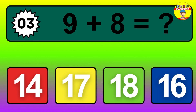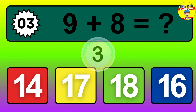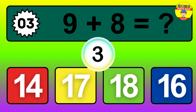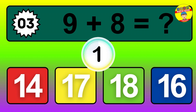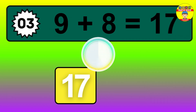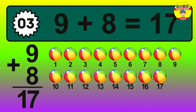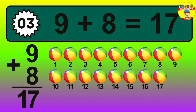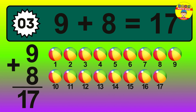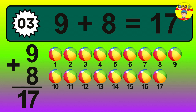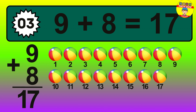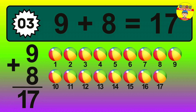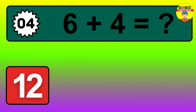Question 3. 9 plus 8 equals what? So the answer is 9 plus 8 is 17. Let's count it. 1, 2, 3, 4, 5, 6, 7, 8, 9, 10, 11, 12, 13, 14, 15, 16, 17.